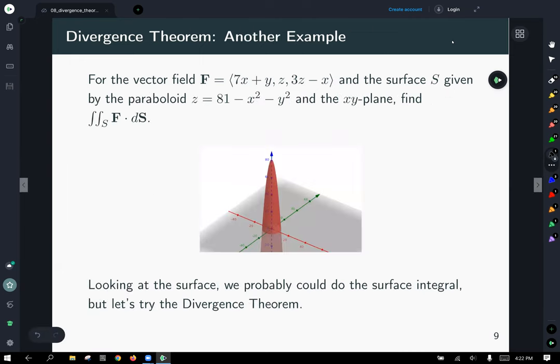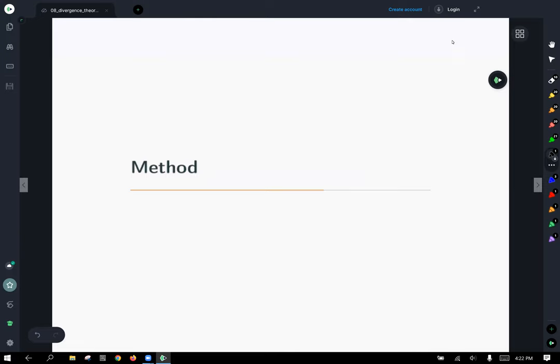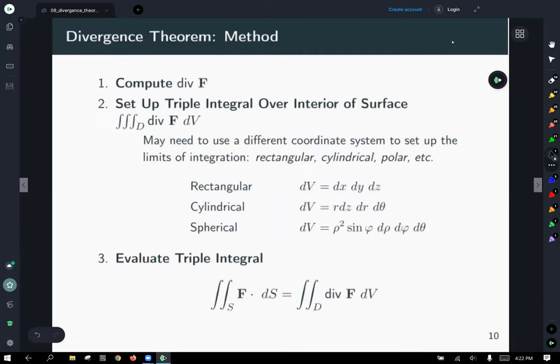All right, so let's work another example. This time, our vector field has component functions for x are 7x plus y, y component is z, and the z component is 3z minus x. This time, our surface is given by the paraboloid z equals 81 minus x squared minus y squared, and the xy plane, and we're asked to find the surface integral. So again, we could do this surface integral most likely, but let's try the divergence theorem. Well, before we do that, let's talk about a general method to attack the divergence theorem. First, we know it's going to involve the divergence.